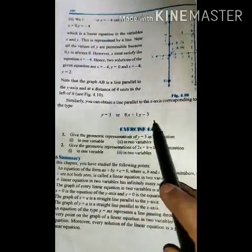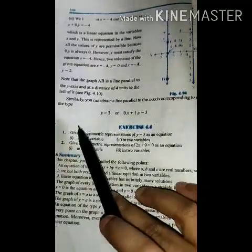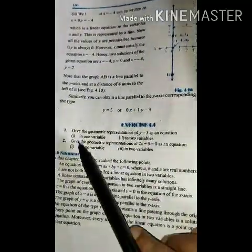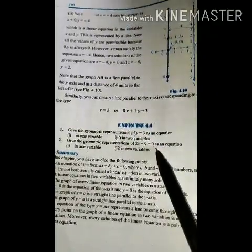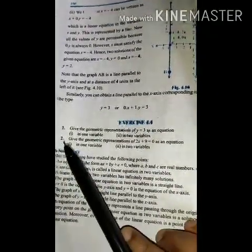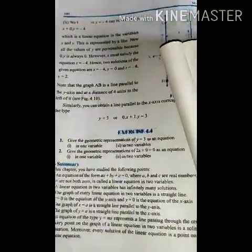Okay, the exercise 4.42, question number 2. We need to represent 2x plus 9 equal to 0 as an equation in one variable and in two variables.